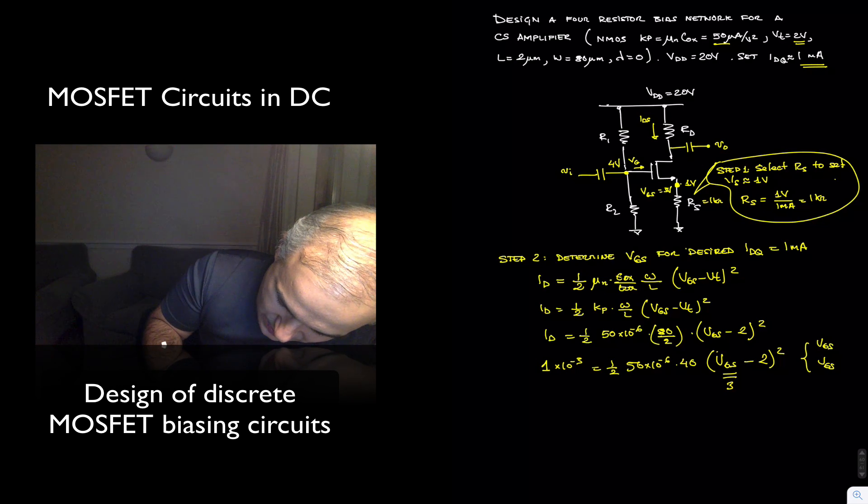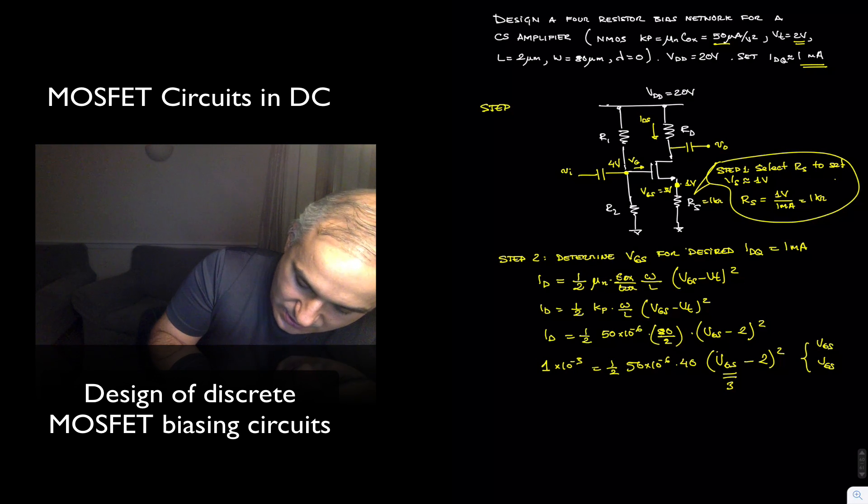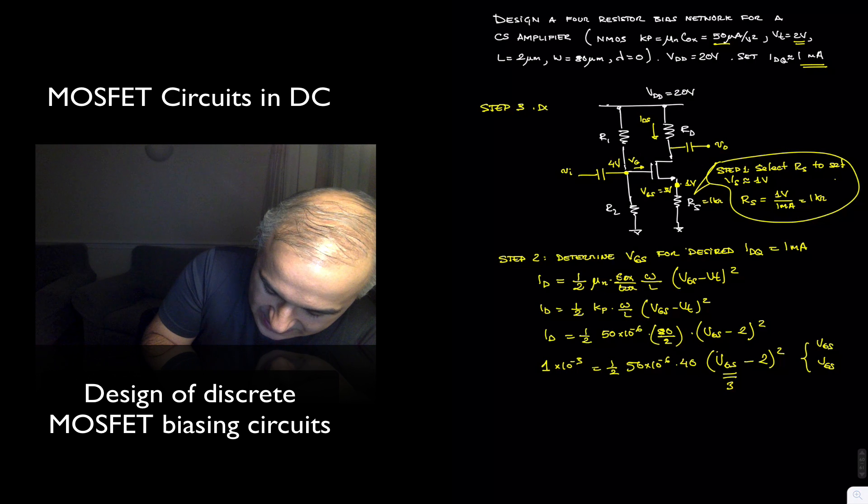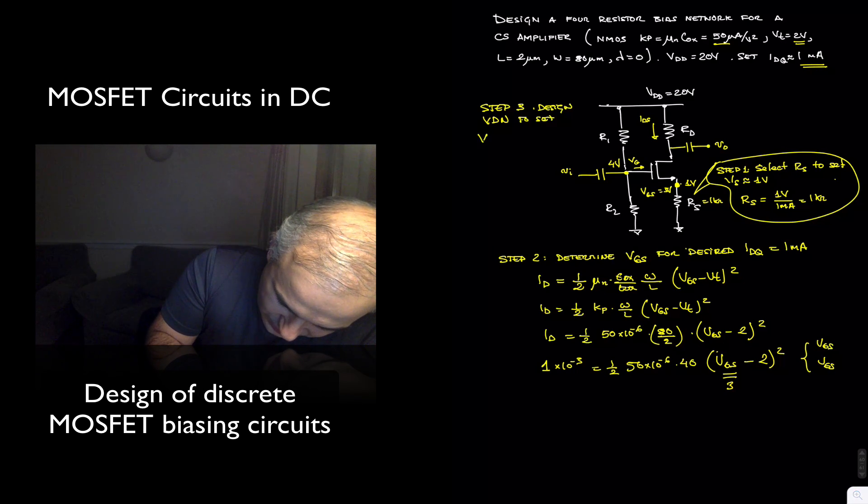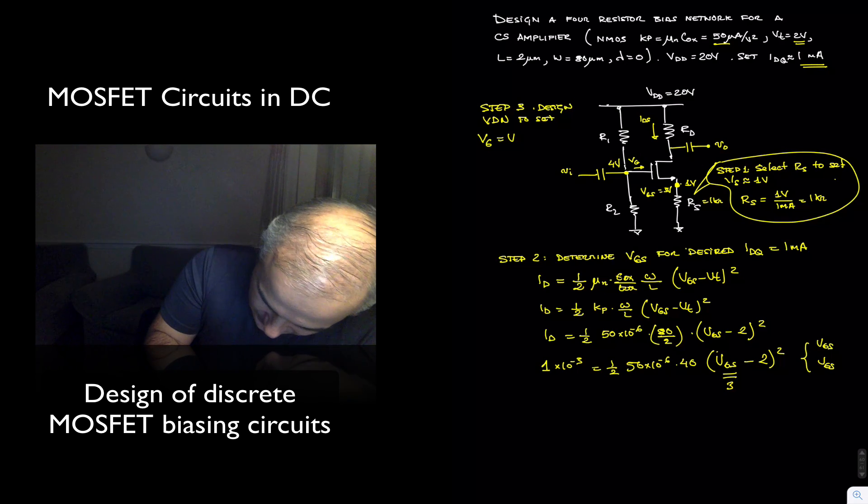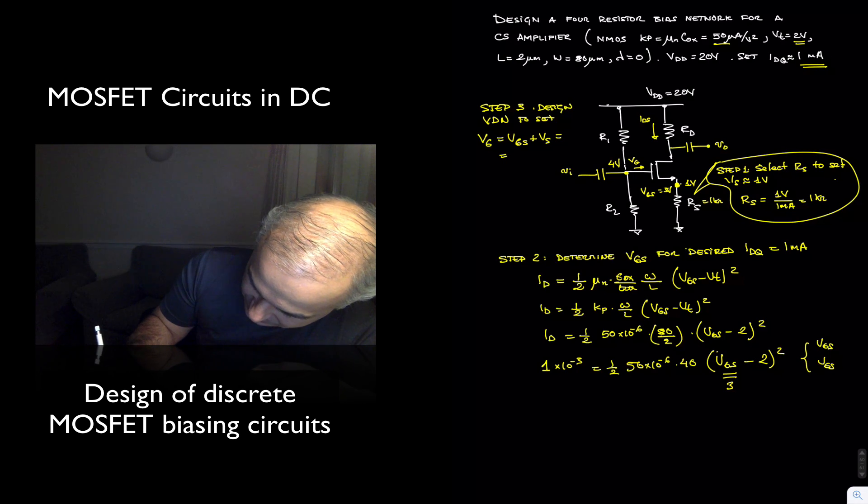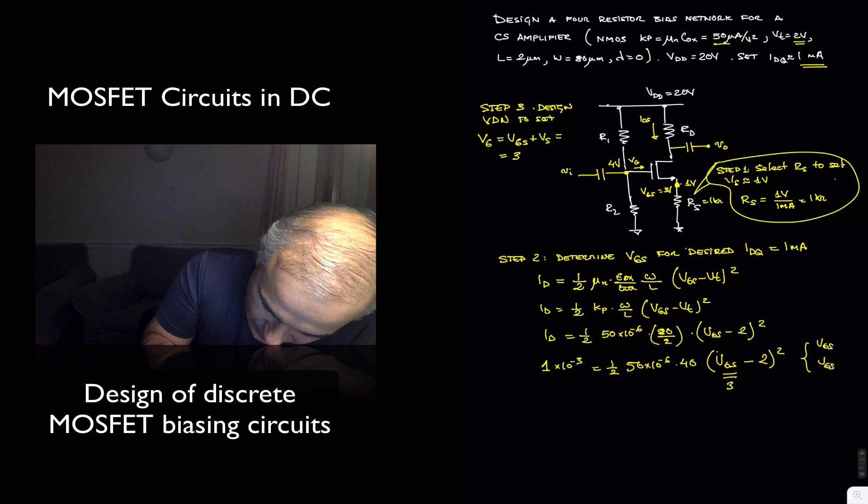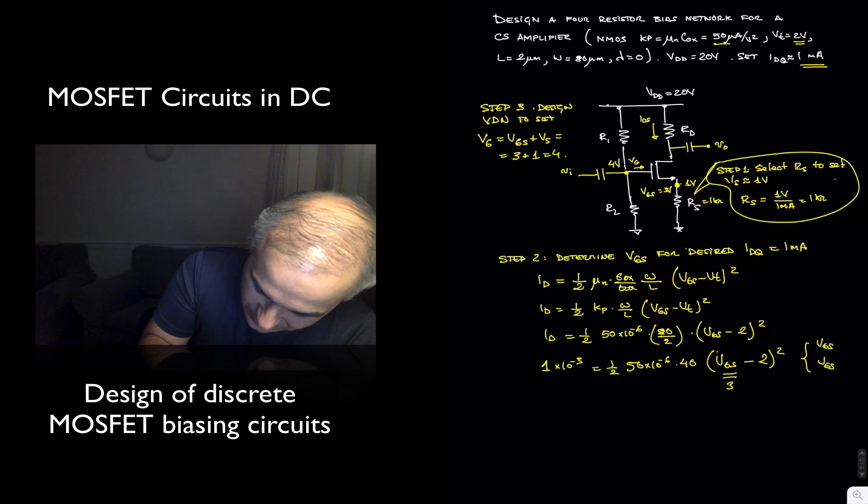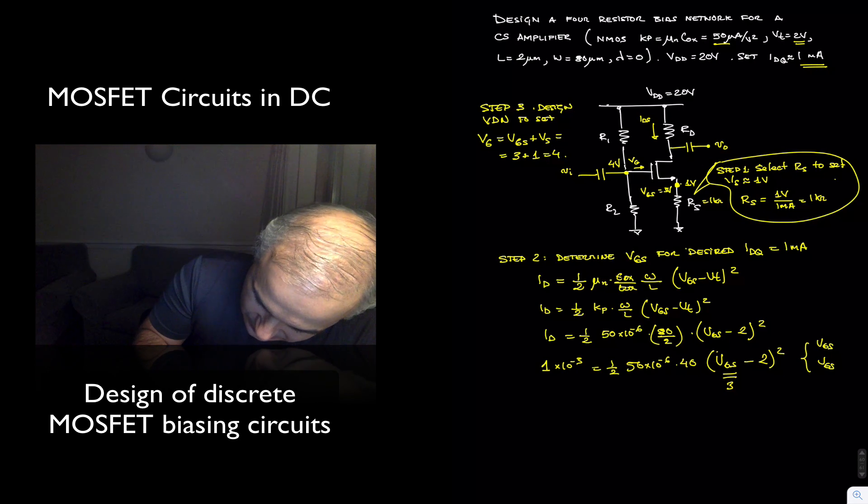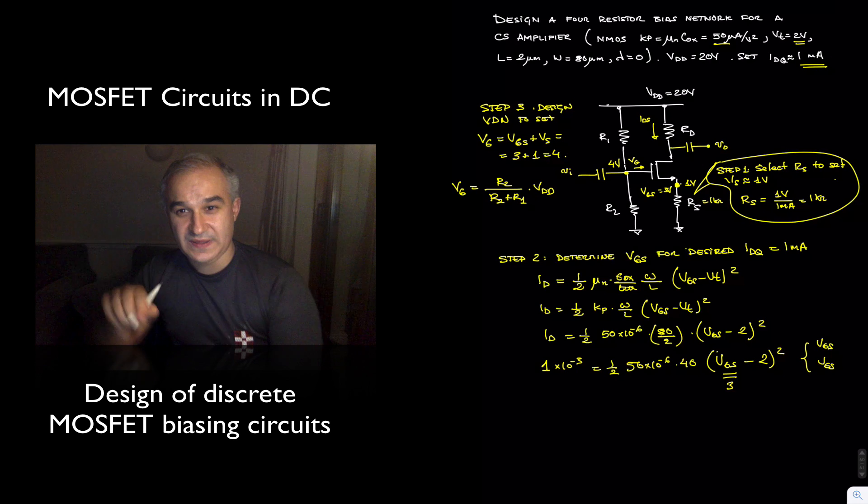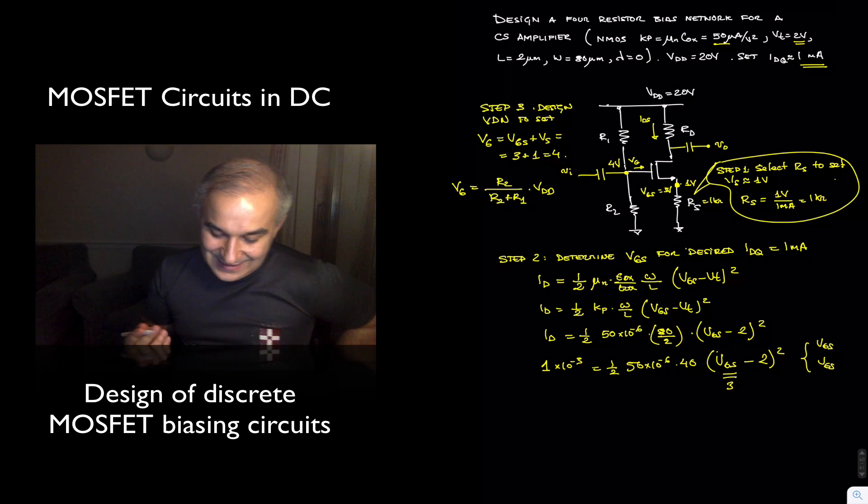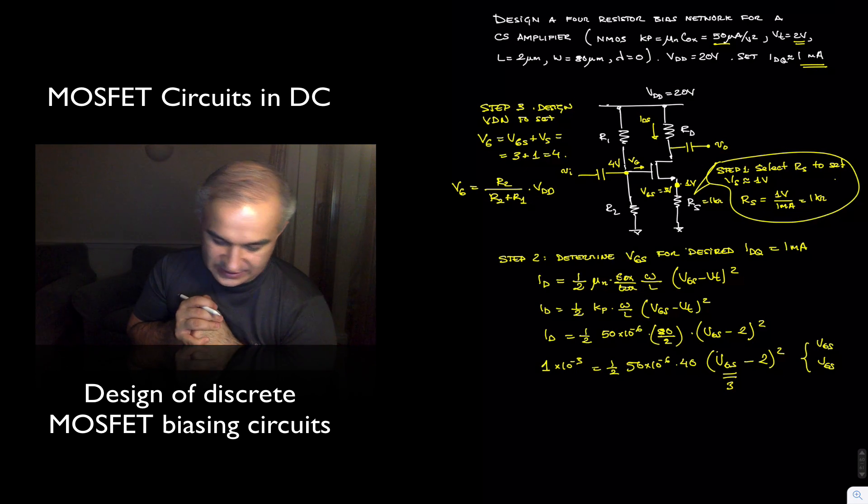So our step 3 is going to be design the voltage divider network to set the voltage at the gate to be the voltage gate to source plus voltage at the source, which is, in this case, we found that voltage gate to source was 3 volts plus 1 volt equals 4 volts there. And so we can, in this case, accomplish that. In general, we are going to have that voltage at the gate is R2 over R2 plus R1 times VDD. And we don't have to worry about the input impedance looking into the gate simply because it is infinity.